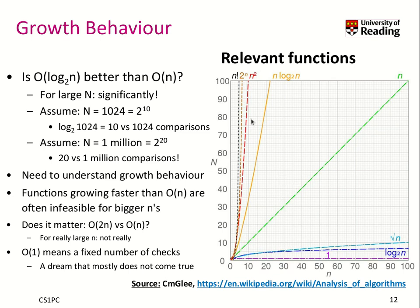Now let's look at the upper quadrant. If something is n times log₂(n), we already see a much steeper growth. Then we have n², 2 to the power of n, and n factorial. This is typically the order by which we classify algorithms: log₂(n), square root of n, n, n·log₂(n), and so forth — those are all relevant complexity classes.